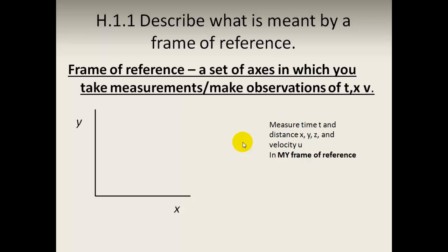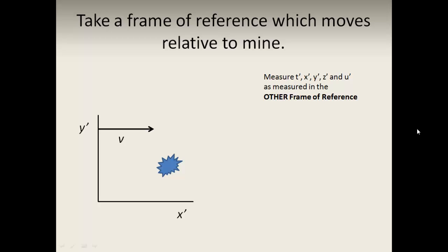When we measure in our own frame of reference, we use the letters Y, X, and so on with no complement. So here is an event at T in our frame of reference. When we look at another frame of reference which is moving relative to mine, we annotate it with a prime, so the measurements done in that frame of reference are marked with a prime — Y prime, X prime.